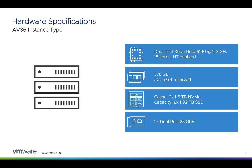AVS clusters are based on hyper-converged bare-metal infrastructure. Those hosts come from an isolated pool where they've passed all health checks and have all data securely deleted. These hosts are available for purchase by hourly billing or by one-year and three-year reserved instances. There is only one host type available today — it's called AV36 — and it contains two 18-core Intel Xeon Gold 6140 CPUs at 2.3 GHz with hyper-threading enabled, 576 GB of RAM, two 1.6 TB NVMe drives for vSAN cache, eight 1.92 TB SSDs for vSAN capacity, and two dual-port 25 GB Ethernet NICs.